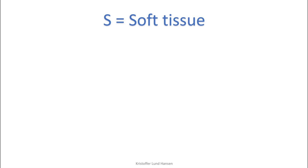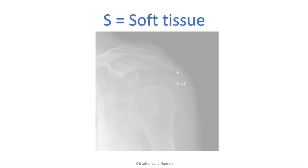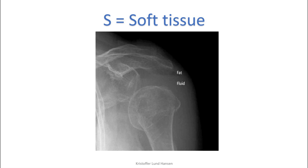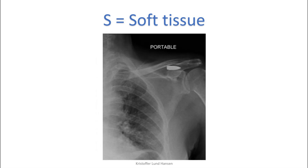The last point — S stands for soft tissue. The main thing you will do here is notice any swellings and effusions; effusions being the accumulation of fluid. Here we have a fat pad that has formed — fat shows as a more blackish area, and when fat accumulates like this it hints towards a possible fracture. We also have an example showing a foreign body, here being a gunshot wound to the shoulder.